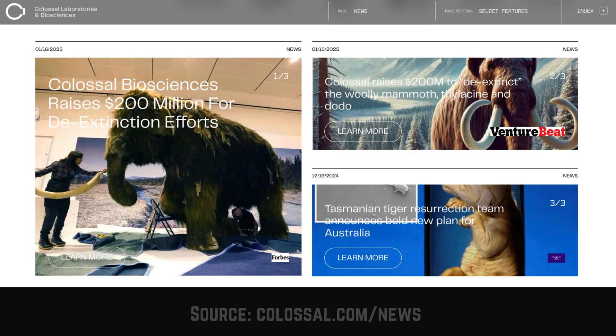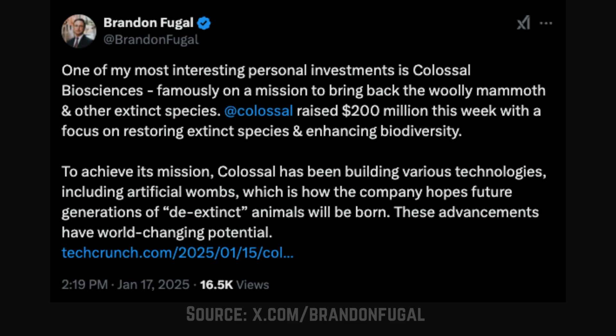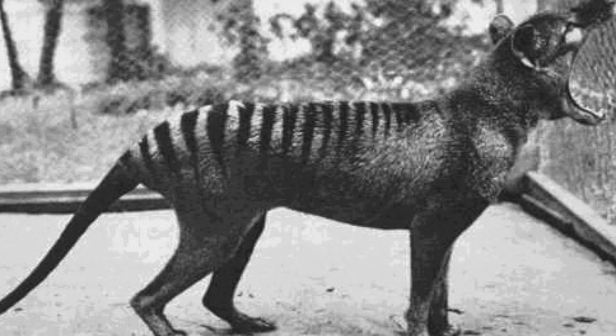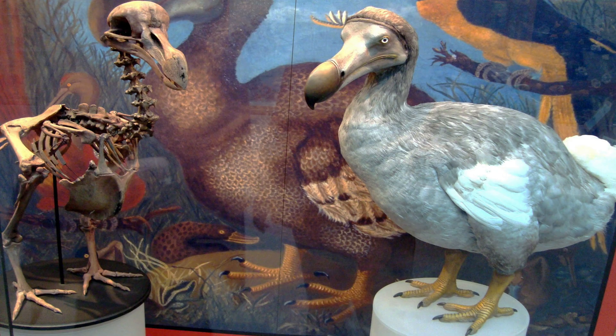In January of 2025, Colossal Biosciences announced a new round of funding towards its de-extinction projects. With the help of scientists utilizing AI and advanced gene editing technology called CRISPR, they're on track to bring back the woolly mammoth and Tasmanian tiger, projected to be by the year 2028. They're also looking to revive the dodo bird.